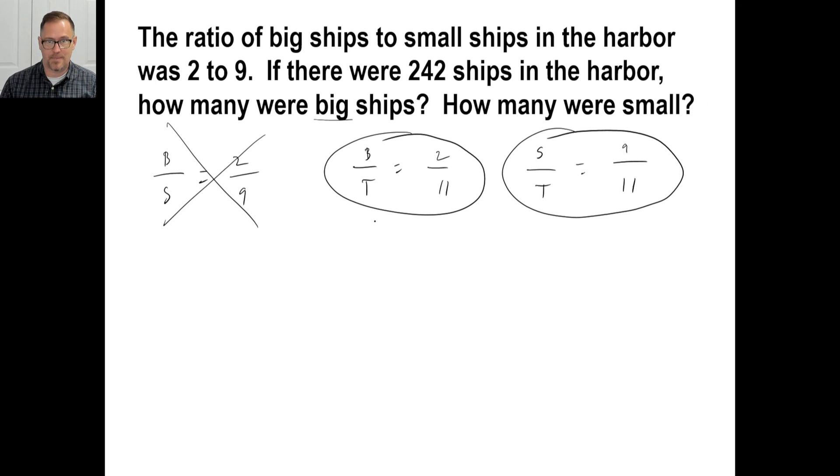Let's go. How many were big? So, the total is 242. I'm using this one first. And we don't know big. So, we know it's 2 to 11 though. All right. So, if we go 11 times B equals 2 times 242. That's 484. Did I do that right? Did I do that right? Oh, yeah. So, B is going to be, there will be 44 ships. There we go.